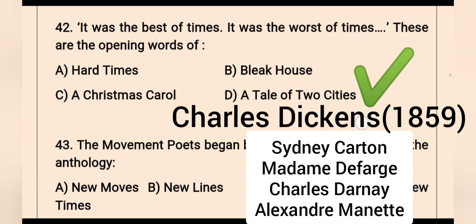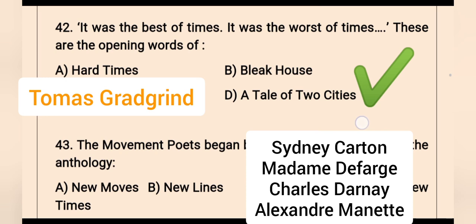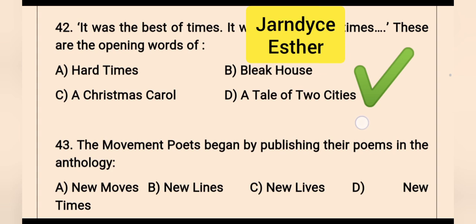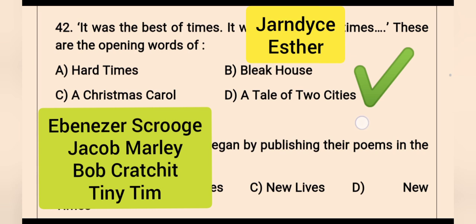Hard Times is another novel by Charles Dickens, with main character Thomas Gradgrind. Bleak House is another work where characters include Jaundice, Esther, etc. A Christmas Carol is also by Charles Dickens — it's a novella and a ghost story of Christmas, with characters Ebenezer Scrooge, Jacob Marley, Bob Cratchit, and Tiny Tim.